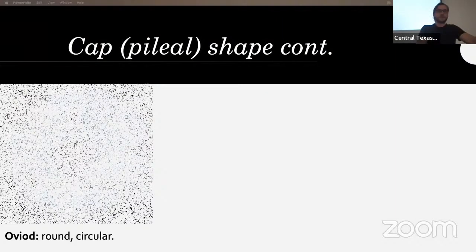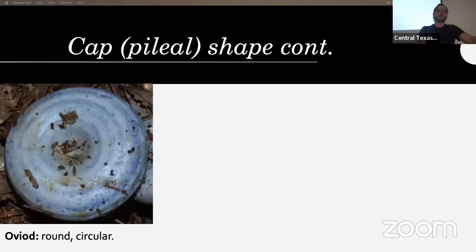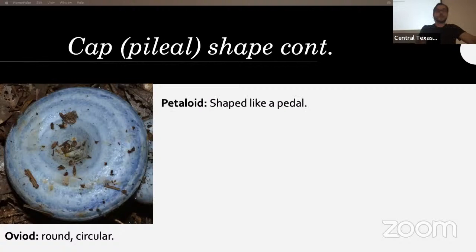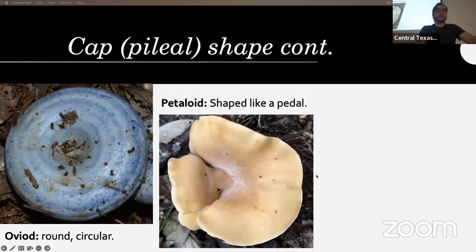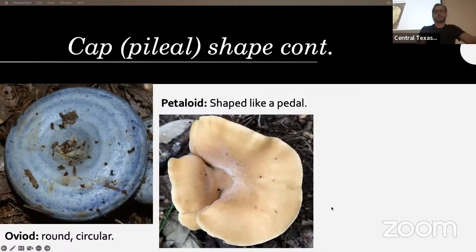The pileal shape — the shape of the cap. If it's ovoid it's round or circular; many Russula and Lactarius are fairly round. They can be petaloid, shaped like a petal. This is a pretty common one around here, Hohenbuehelia petaloides — very common in mulch and any ground with a lot of duff. It looks a lot like an oyster mushroom, though it does not taste good like one.